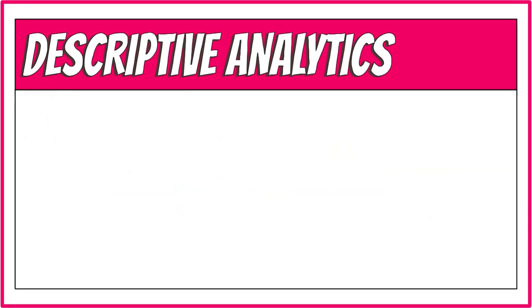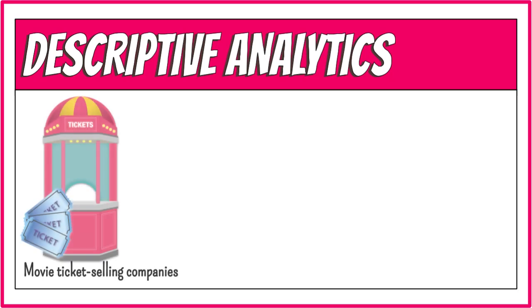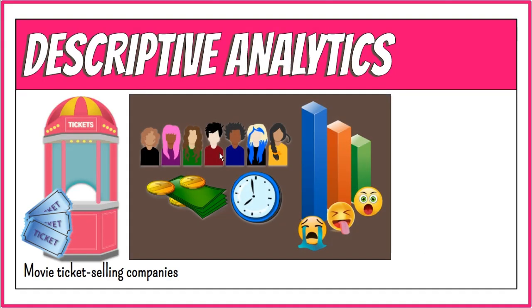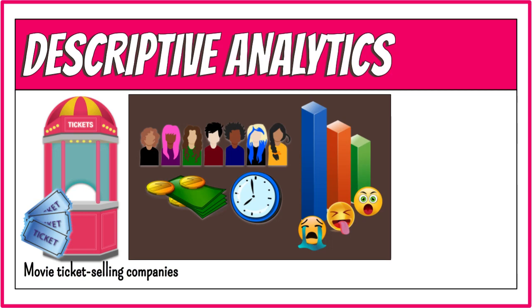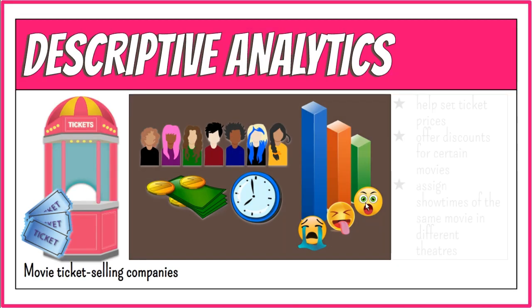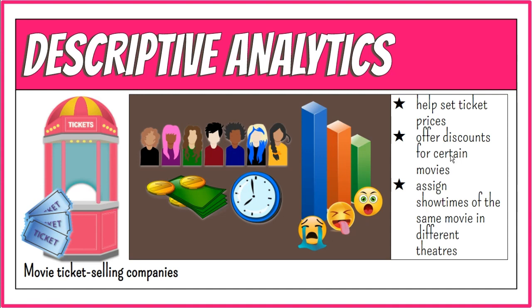Results of descriptive analytics can be used in making data-driven decisions. Movie ticket selling companies can capture data about customers, ticket sales, and showtimes. They can investigate the total sales for different genres of movies — for example, comedy, drama, and horror. These and other analyses help set ticket prices, offer discounts for certain movies or showtimes, and assign showtimes of the same movie in different theaters. With enough data and processing of descriptive analytics, business analytics tools can start to build predictive models.